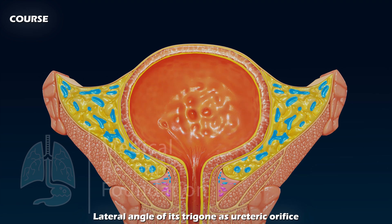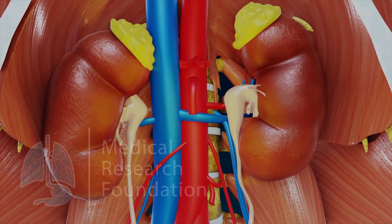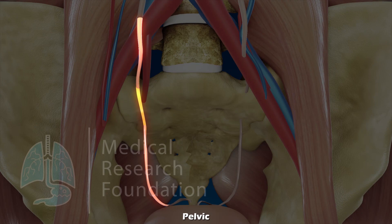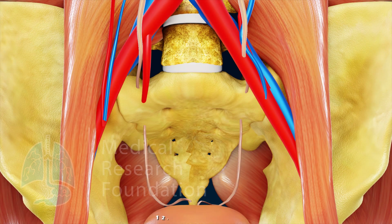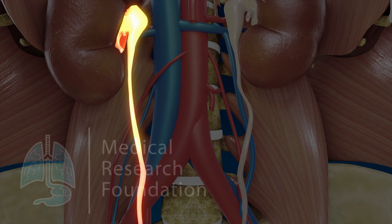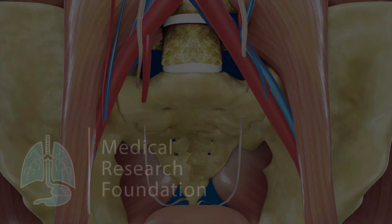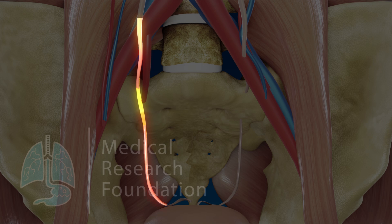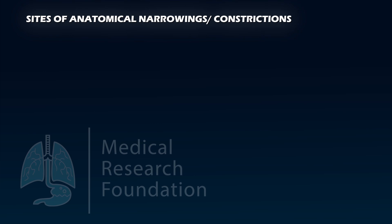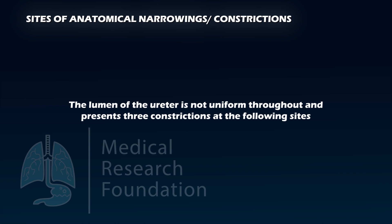Within the bladder wall it takes a sinuous course and opens into the cavity of the bladder at the lateral angle of its trigone as the ureteric orifice. The ureter is generally divided into two parts — abdominal and pelvic — each about 12.5 centimeters or five inches. The abdominal part extends from the renal pelvis to the bifurcation of the common iliac artery; the pelvic part extends from the pelvic brim to the base of the urinary bladder.